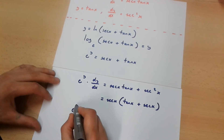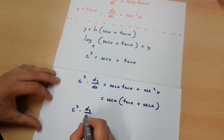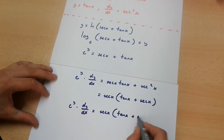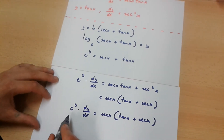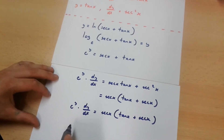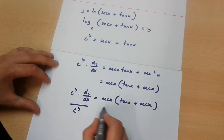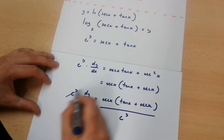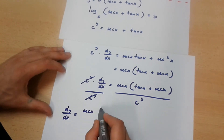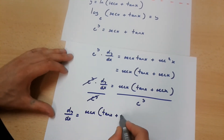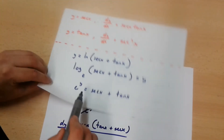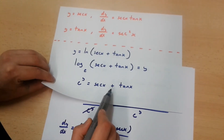So we have e to the power of y times dy over dx is equal to sec x multiplied by tan x plus sec x. Now let's divide both sides of this equation by e to the power of y. We get dy over dx is equal to sec x multiplied by tan x plus sec x, all over e to the power of y. But e to the power of y is actually equal to sec x plus tan x.